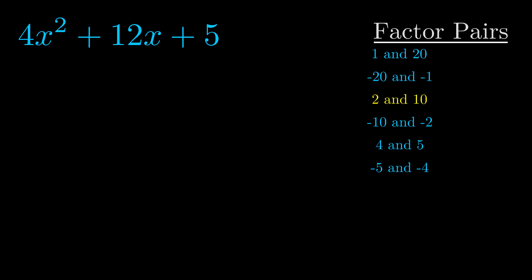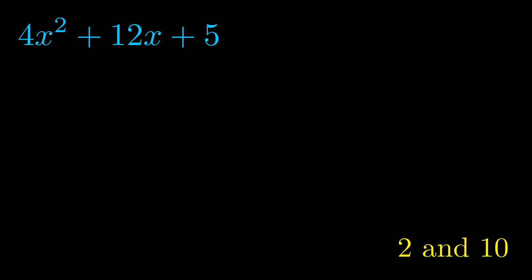And really this is the only factor pair that we need. Now once we have this factor pair what we want to do is use it to split up the b value.